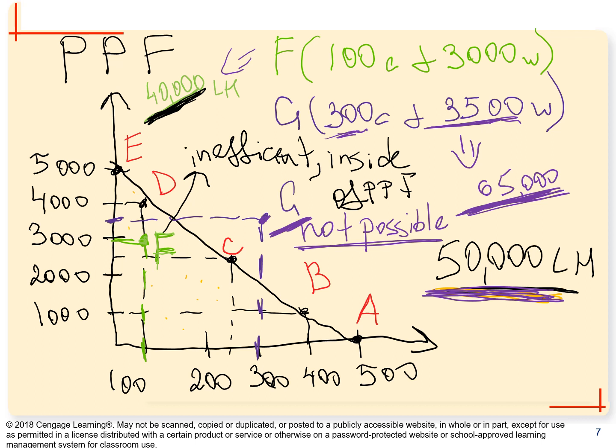One more note: Point G can become possible if we experience improvement in technology. Note this for the test — Point G will be possible if we experience improvement in technology. When that happens, our Production Possibilities Frontier will shift outward. Also, make sure on all the slides you understand that the vertical axis is units of computers and the horizontal axis is units of wheat. You can understand the Production Possibilities Frontier — that's how it's explained in face-to-face classes. Learn it and know it.